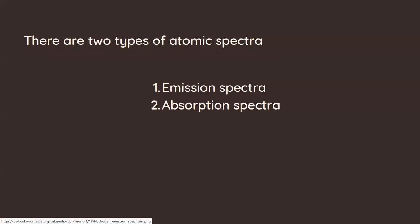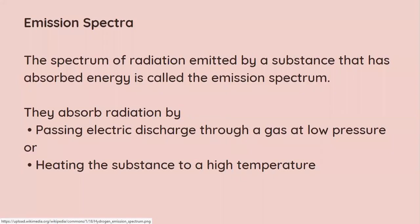Discontinuous spectrum, basically you have two different types of atomic spectra: emission spectra and absorption spectra. As the name suggests, emission spectra is the radiation emitted by a substance. So when atoms or molecules absorb energy they will get excited. They absorb energy by two ways: either by passing an electric discharge through the gas or heating the substance to a very high temperature.